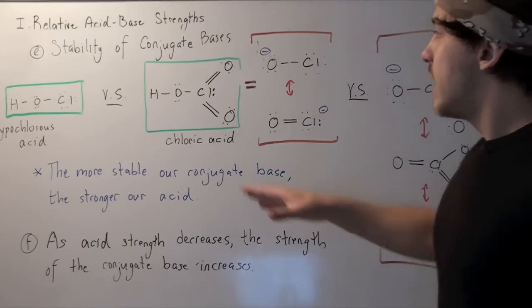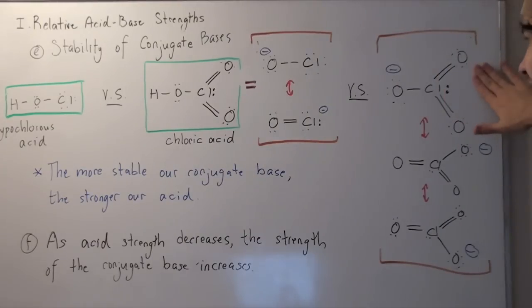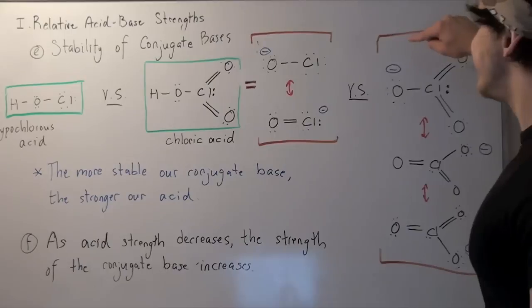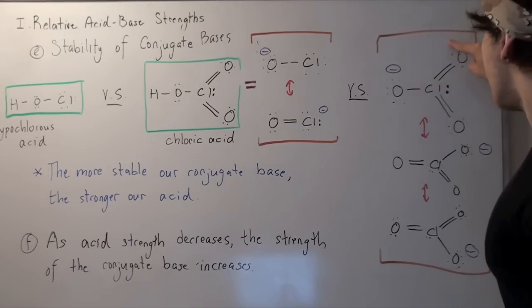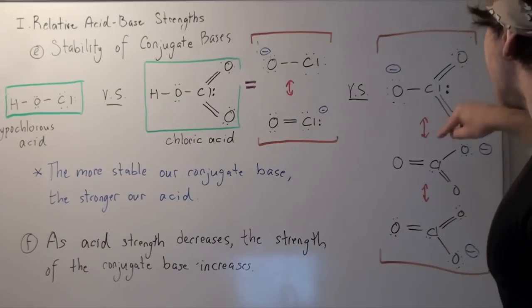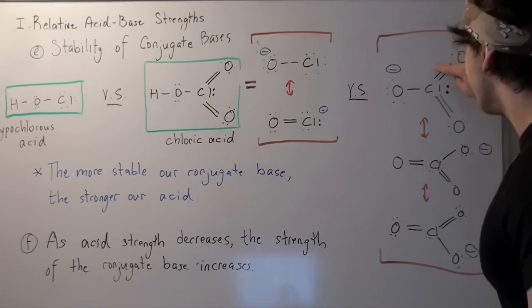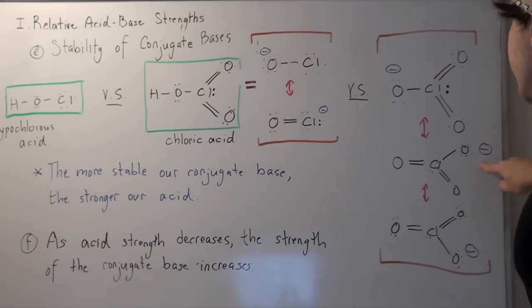Let's examine the conjugate base of our chloric acid. This guy is resonance stabilized by three states. In fact, four states. I'll show you the last one in a bit. This negative charge can be distributed to this oxygen and then this oxygen. And that happens when this guy forms a double bond, displacing this bond, forming a negative charge here.